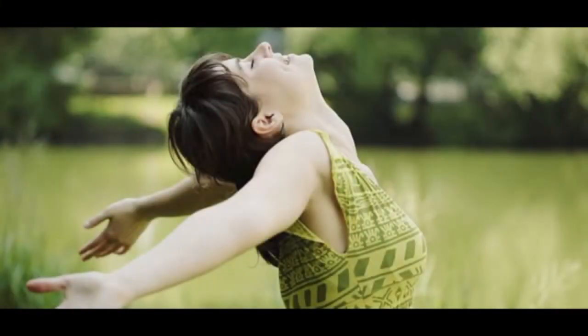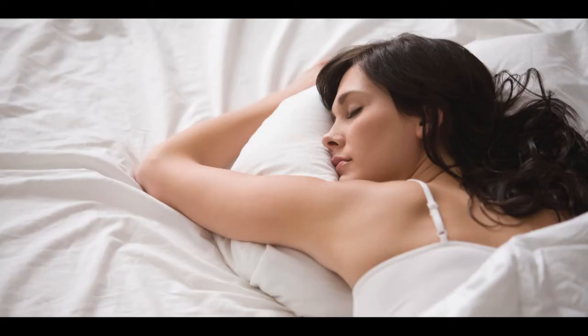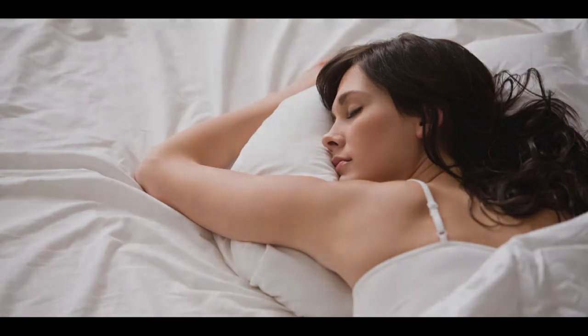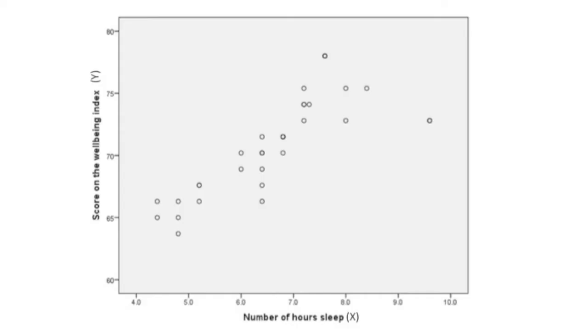For example, there's a fair amount of research that investigates the relationship between wellbeing and sleep. We decided to conduct our own study on wellbeing and sleep at UWS, and we got students to fill out a measure of wellbeing and also record how many hours they slept the previous night. I've plotted this data on this graph. So you can see that the wellbeing scores on the y-axis and that the x-axis is the number of hours that you've slept.